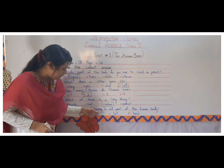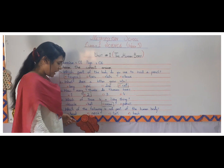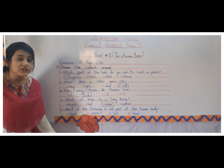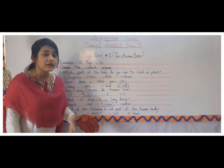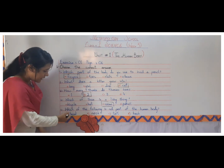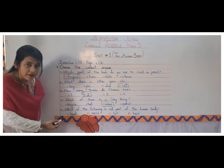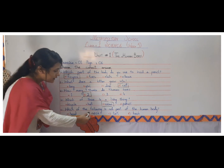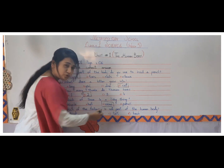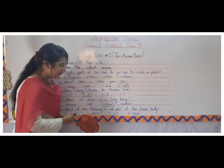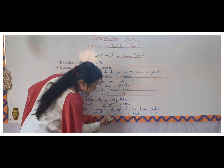Which of the following is not a part of the human body? Head — yes, we all have a head. Neck — yes, we all have a neck. Tail — do we have a tail? No, absolutely not. So the answer is tail.